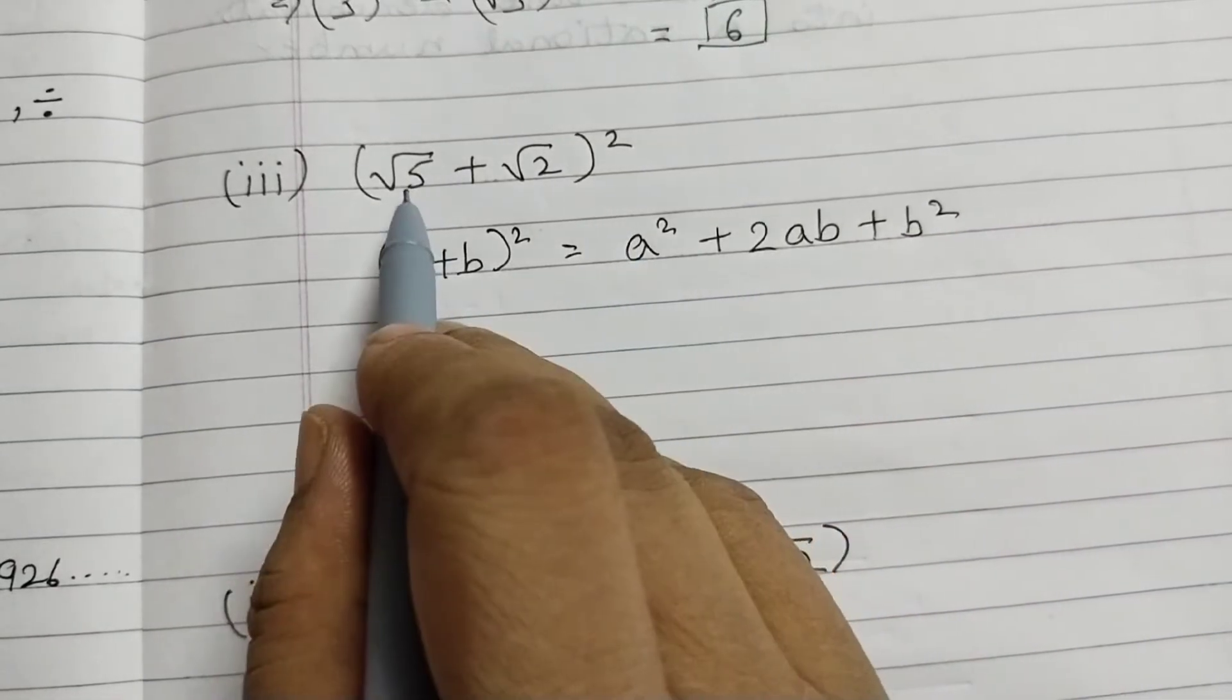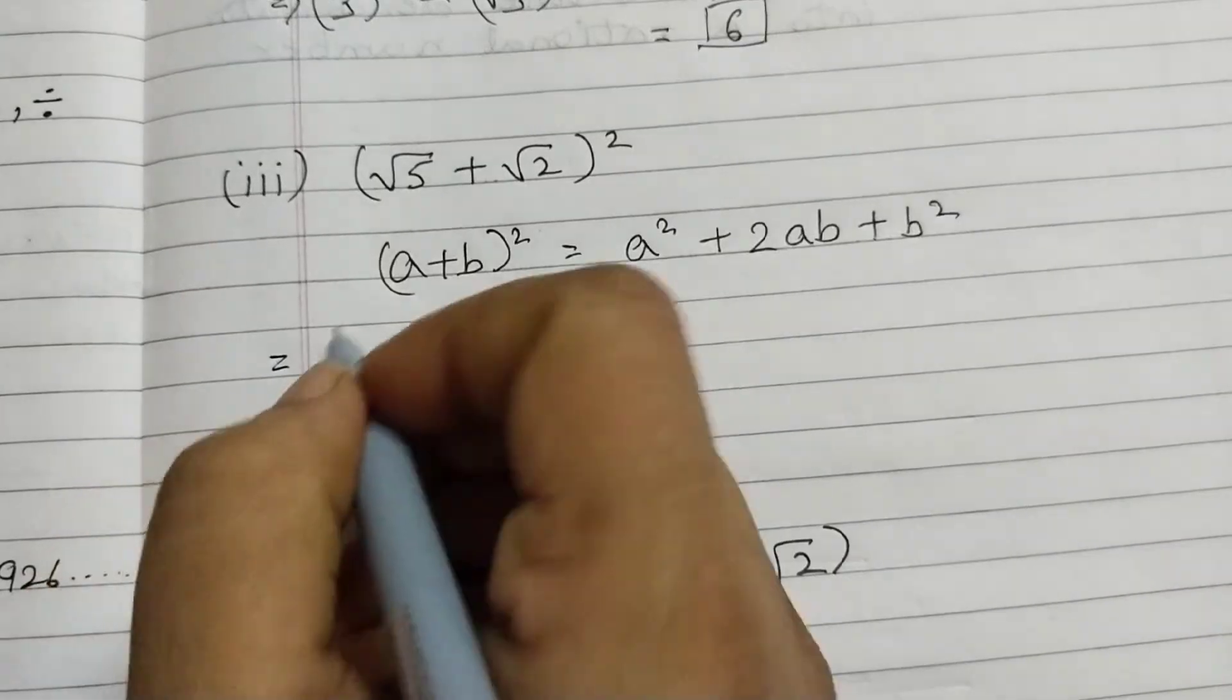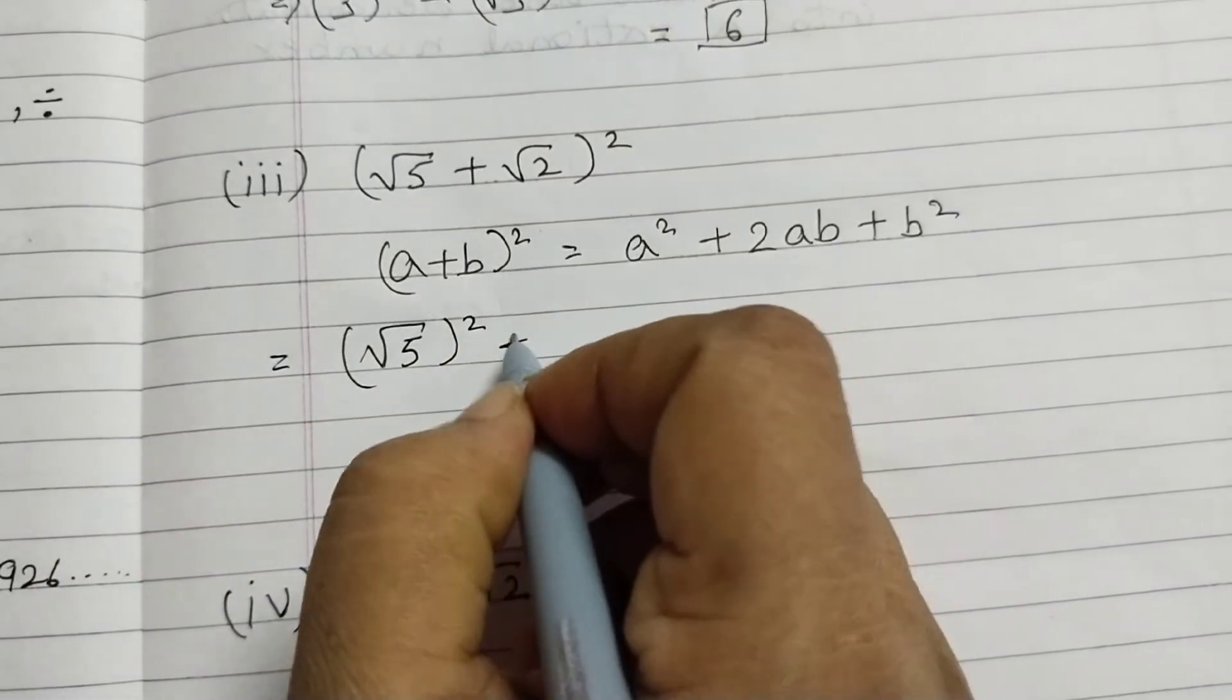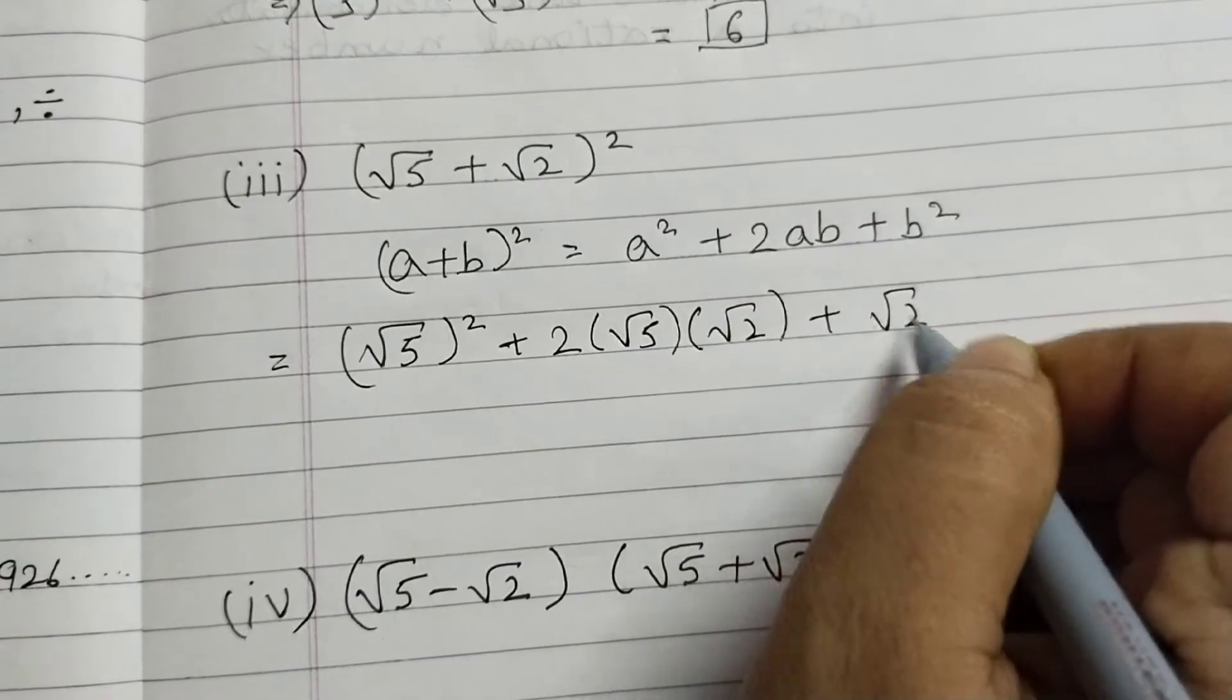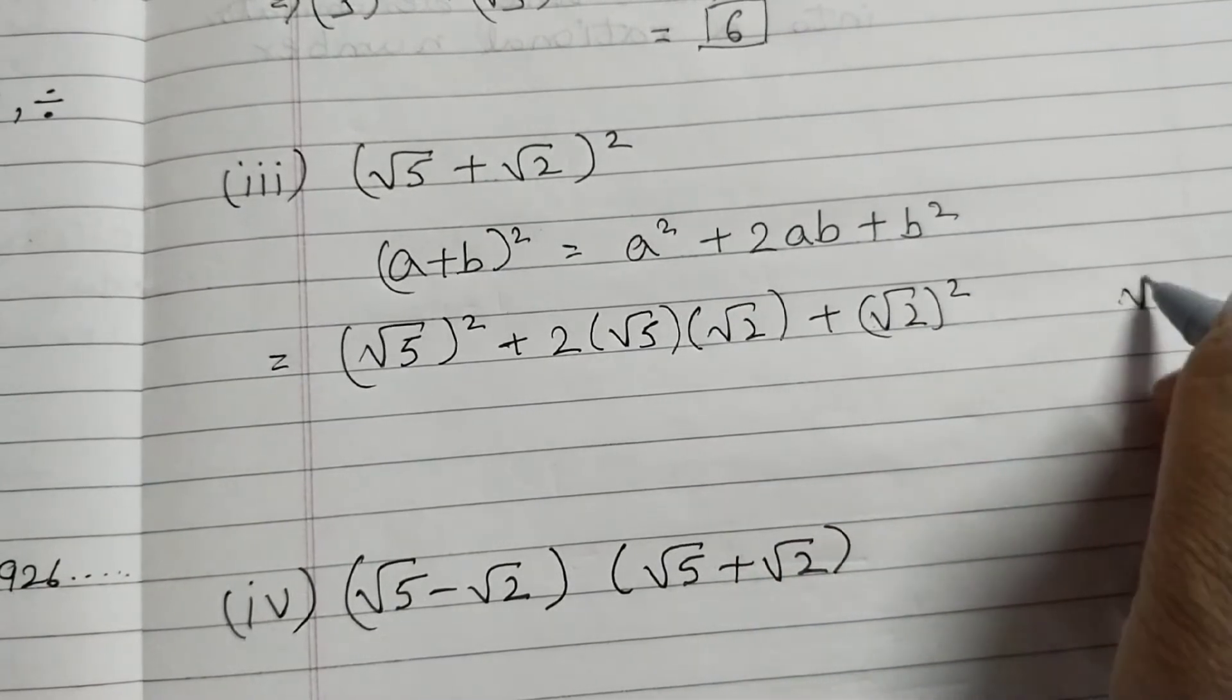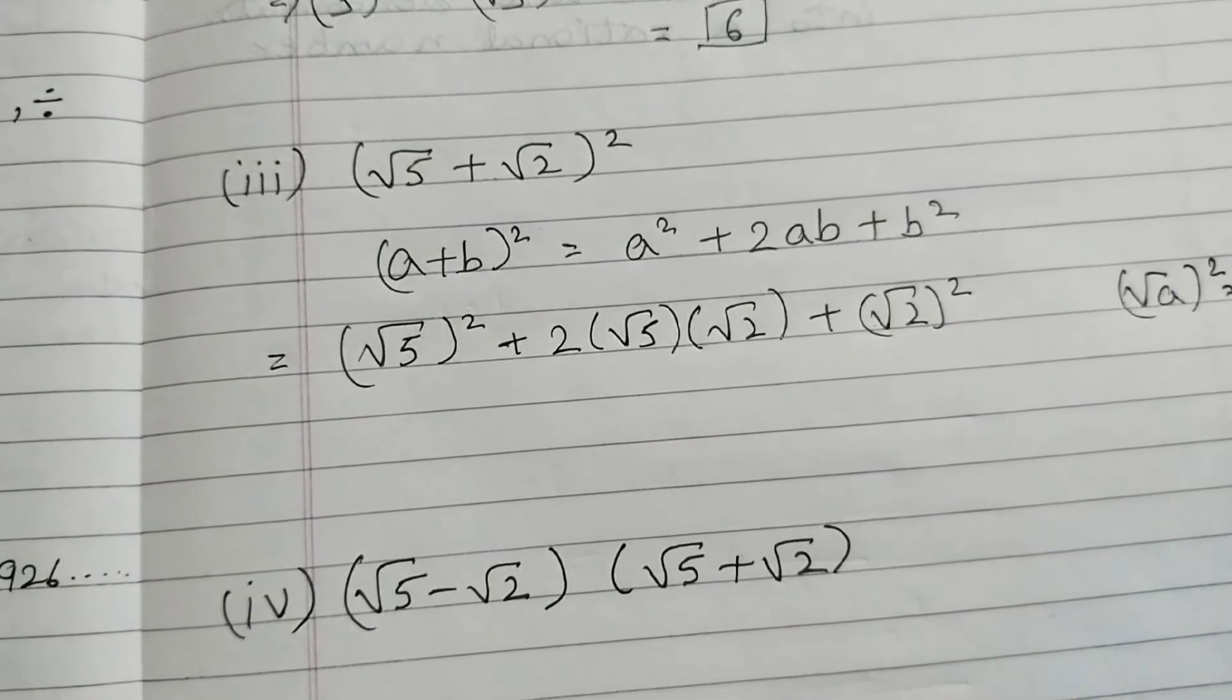Here a is root 5, b is root 2. So that equals to root 5 the whole squared plus 2 times root 5 times root 2 plus root 2 the whole squared. And I told you that when you have the same number multiplied like root a squared, this will become a.